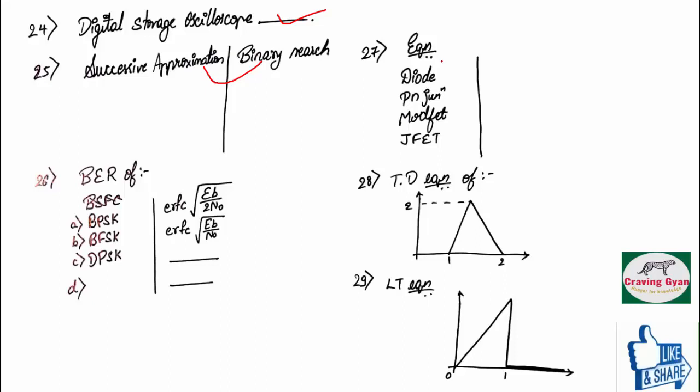And twenty-seventh question was easy question. They have asked the current expression in diode, the current expression in PN junction, the current expression in MOSFET, the current expression in JFET. They have asked.